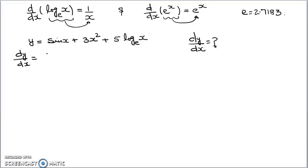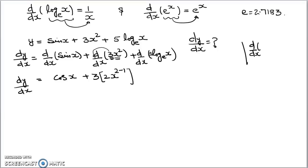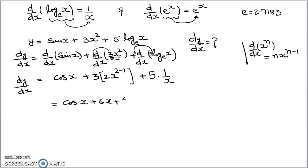Since there is a plus sign, we take the derivative of all three terms separately: derivative of sin x with respect to x, derivative of 3x square with respect to x, plus derivative of 5 log x with base e. Sin x ka derivative is cos x. The constant 3 comes out of the derivative; for 3x square, apply the power rule: x raised to power n gives n into x raised to power n minus 1. The constant 5 also comes out, and log x with base e gives 1 by x. Final result: cos x plus 6x plus 5 by x.